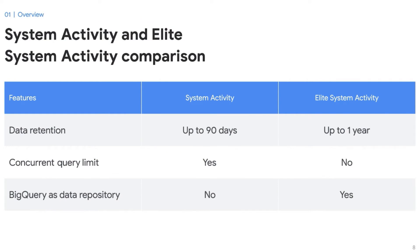System Activity comes in two flavors: Standard and Elite. Standard comes in every Looker instance and includes all of the dashboards and explorers mentioned. Elite System Activity augments these standard capabilities with longer data retention and higher performance to enable you to perform more complex and faster analytics on your System Activity data.